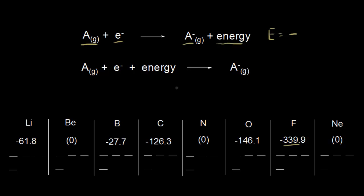When you have a very stable atom that doesn't want an electron, you would have to add energy in order to force it to accept that electron to become an anion. And so since you're adding energy this time, you would represent that energy change with a positive sign. But since it's very difficult to measure how much energy it takes to do this, most of the time you'll see textbooks just say the energy is some value greater than zero. Even more frequently, you'll see just zero written in parentheses. So when you see this, that means that it takes energy to add an electron — those atoms don't want electrons. Neon does not have an affinity for an electron, and we'll talk about why in a few minutes.